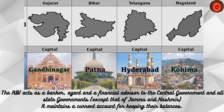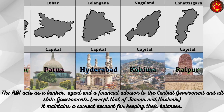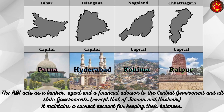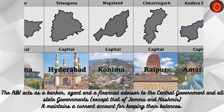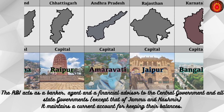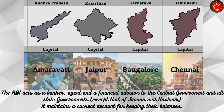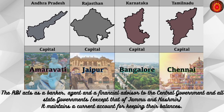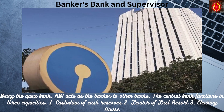The RBI acts as a banker, agent, and financial advisor to the central government and all state governments except that of Jammu and Kashmir. It maintains a current account for keeping their balances. Being the apex bank, RBI acts as the banker to other banks.